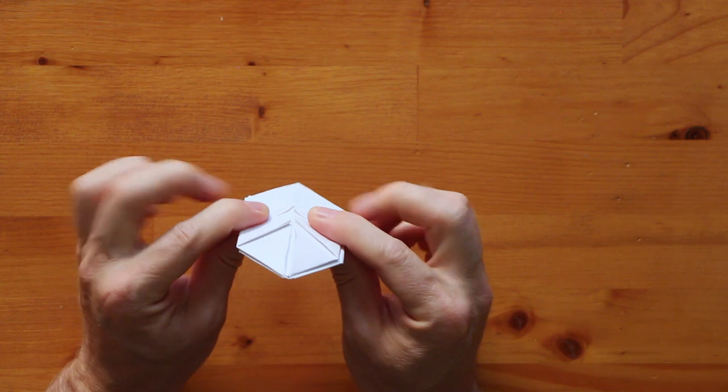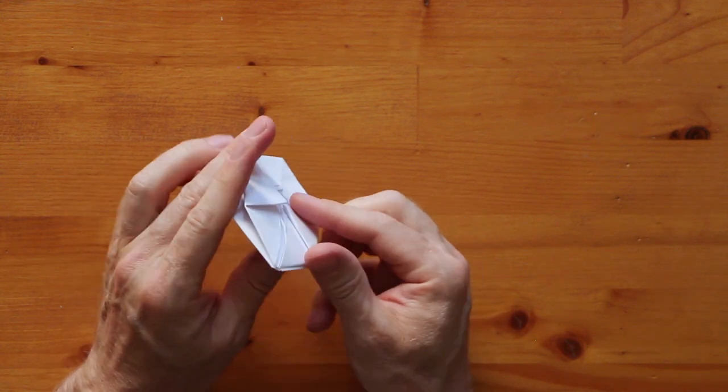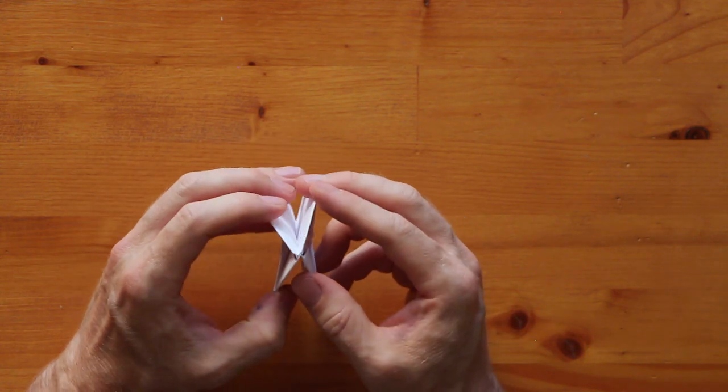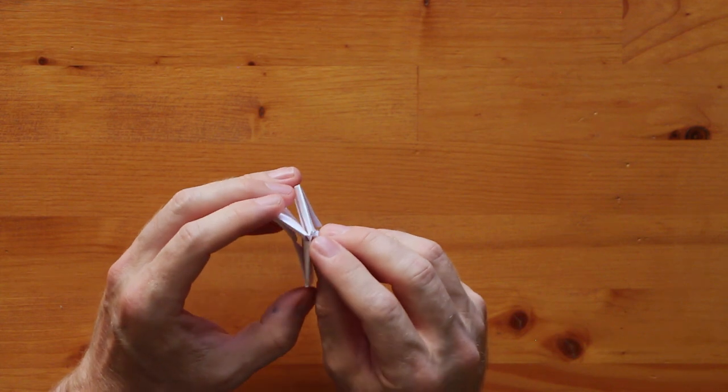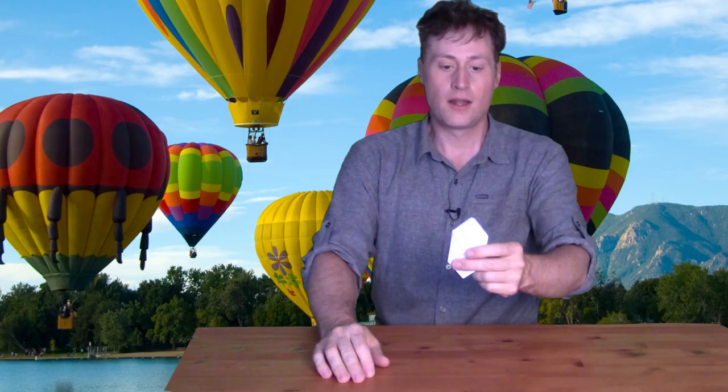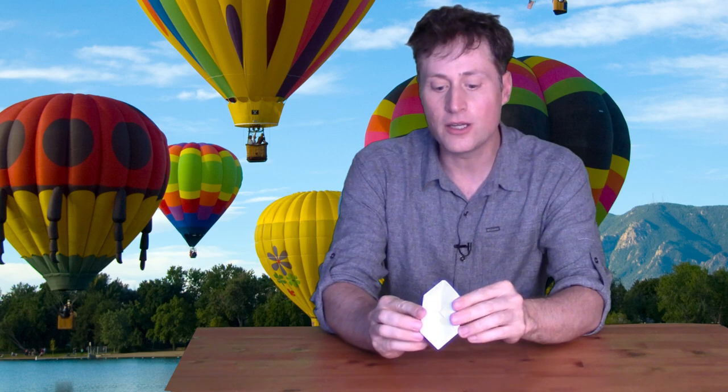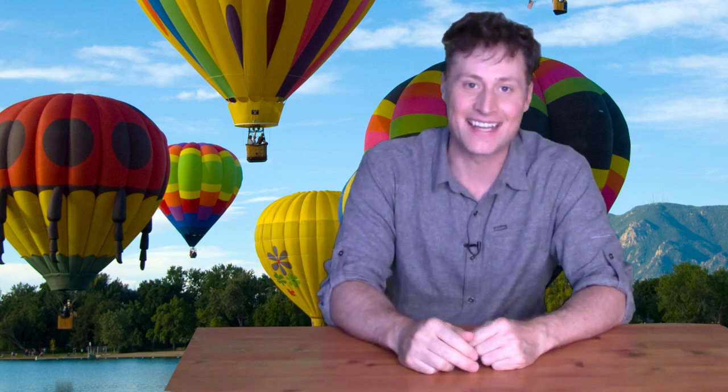And now what you do is if you look closely, one of these ends has a little hole in it. Can you see that? There's a hole right there. What you do is you take it and you put it to your lips and you blow. Don't do it like that. You should hold on to it a little bit better than that. Let's try that again. What you do is you take it and you put it to your lips and you blow.